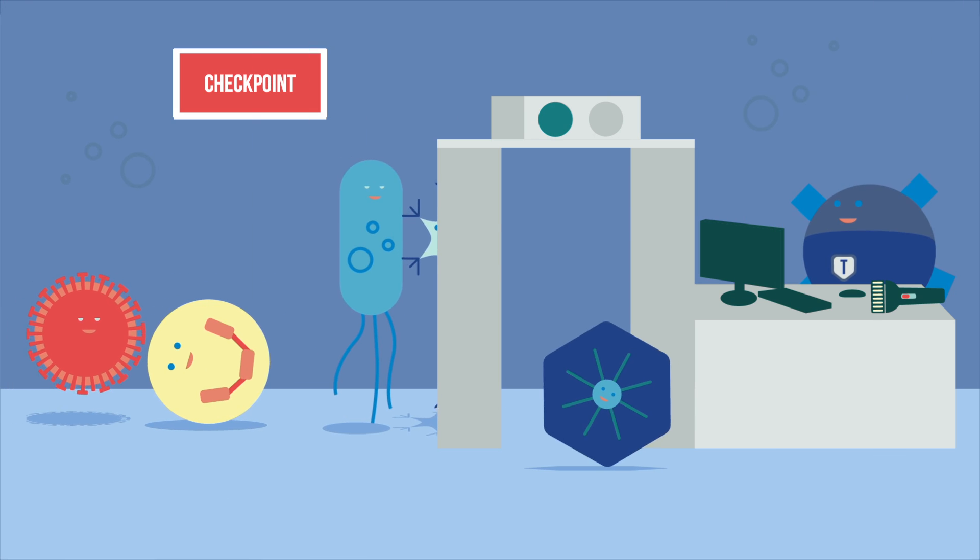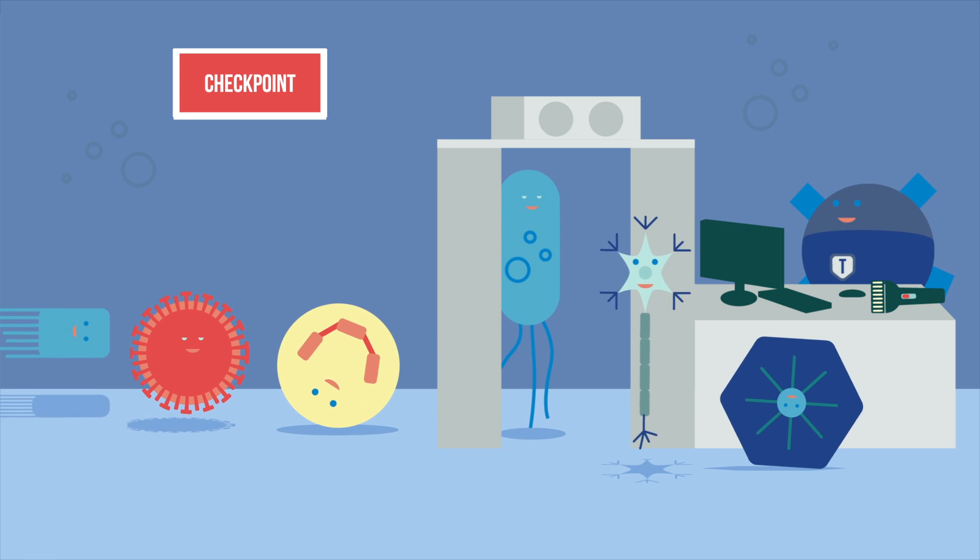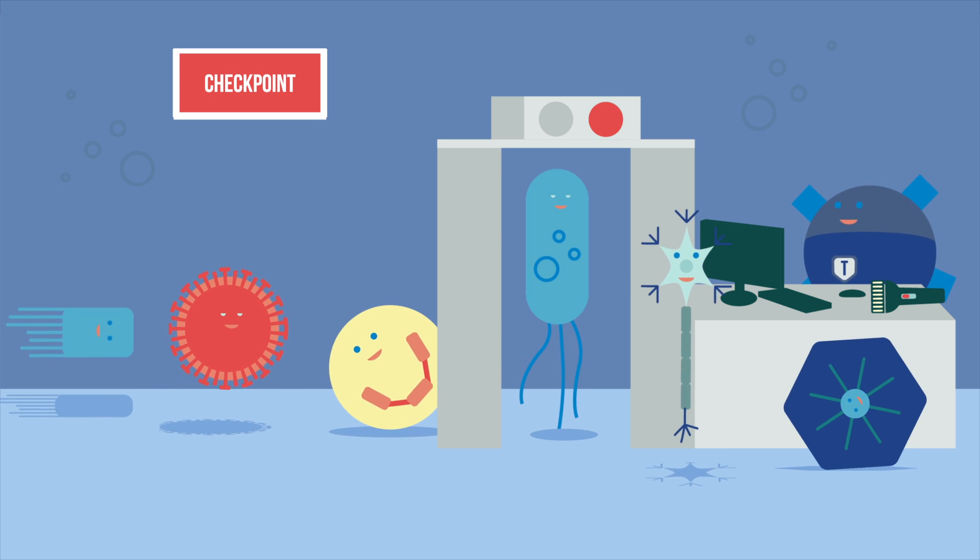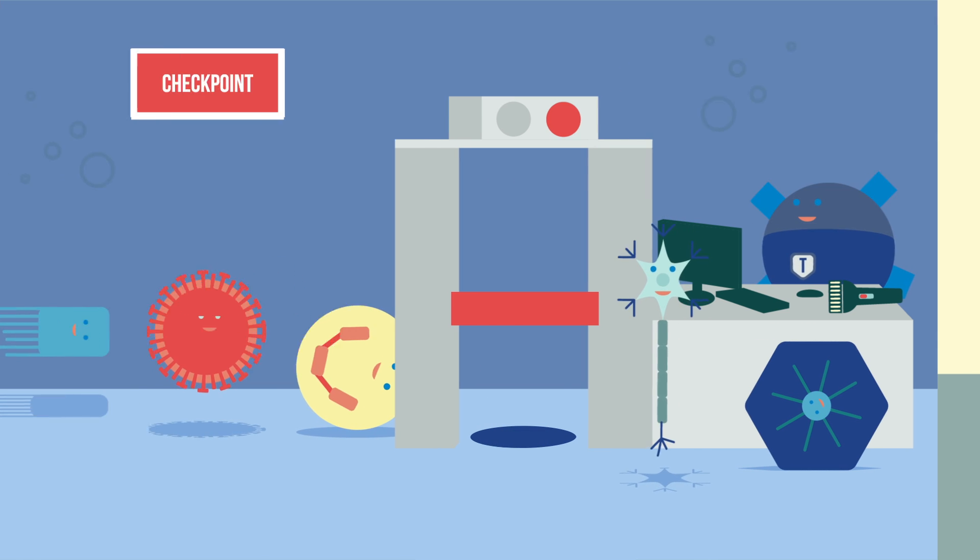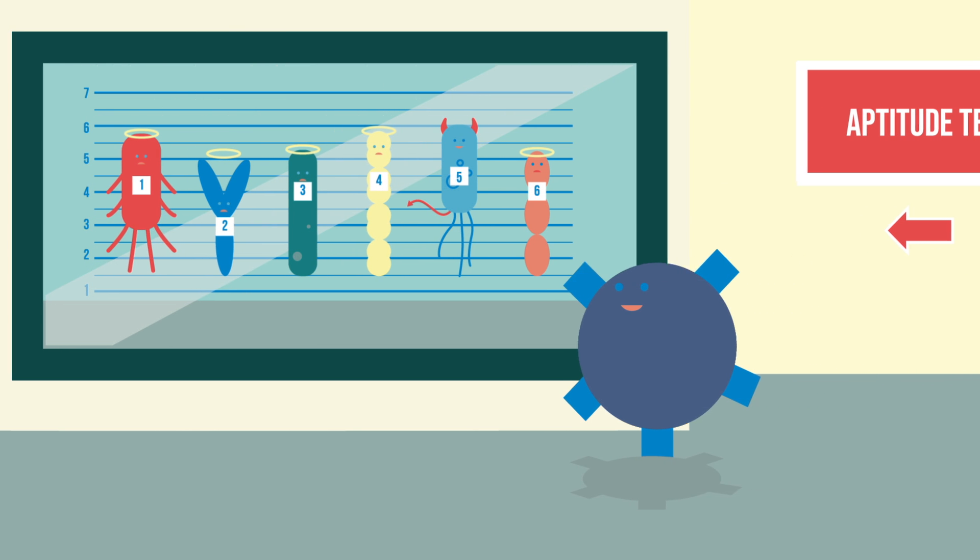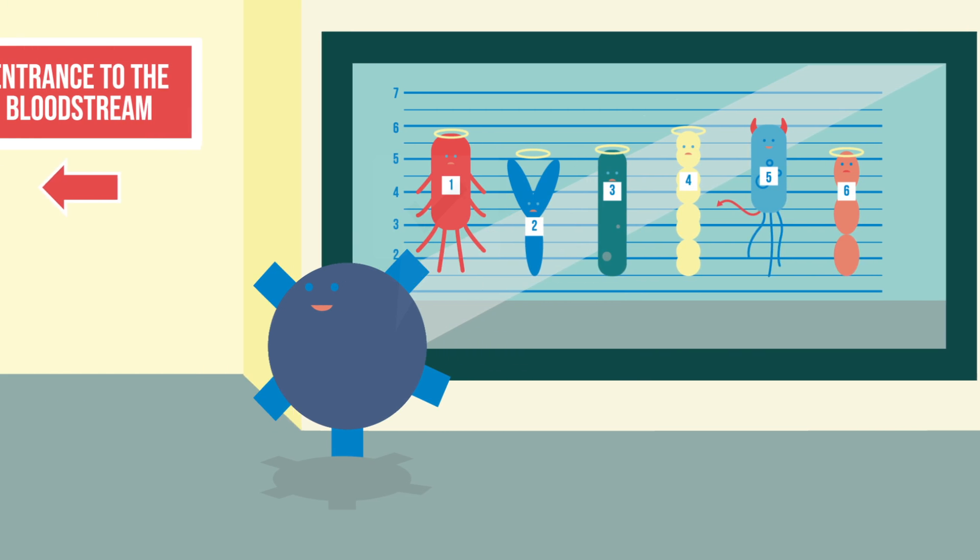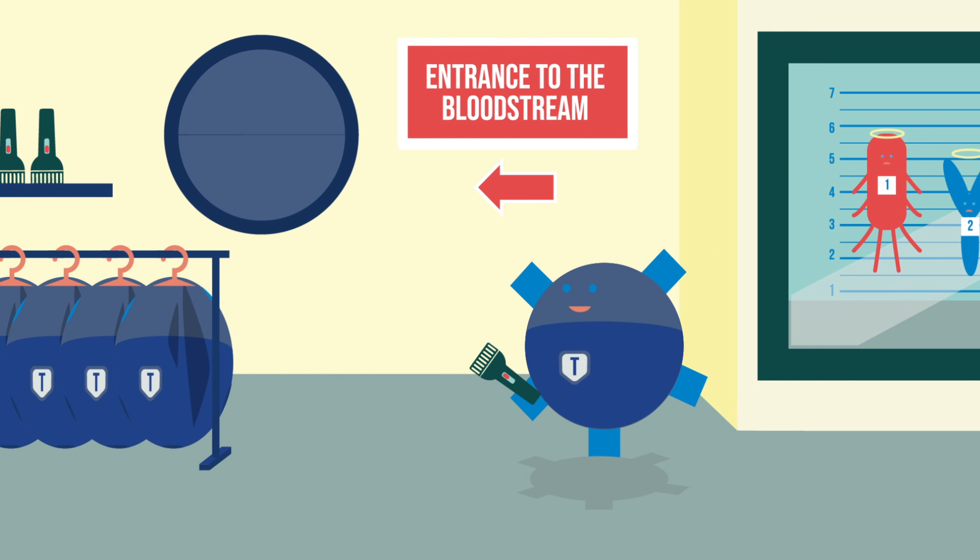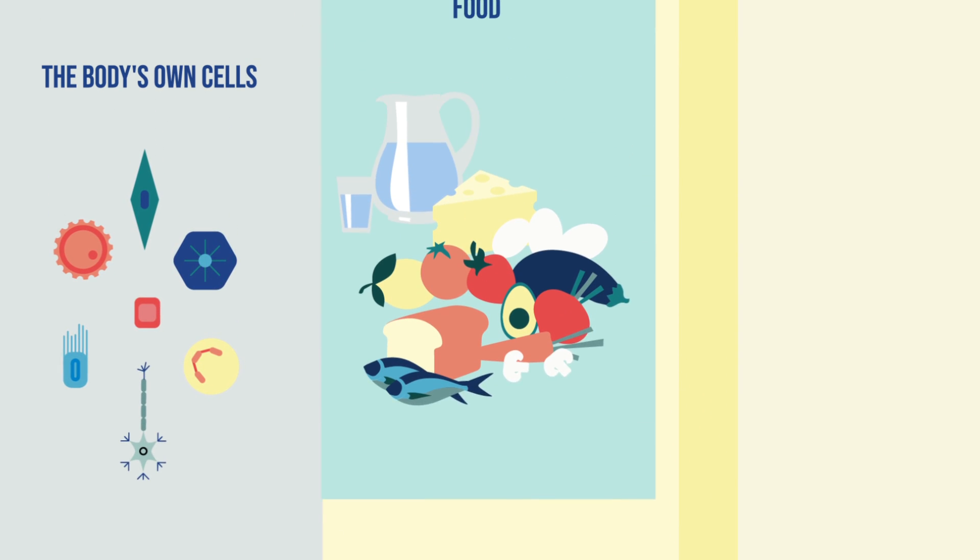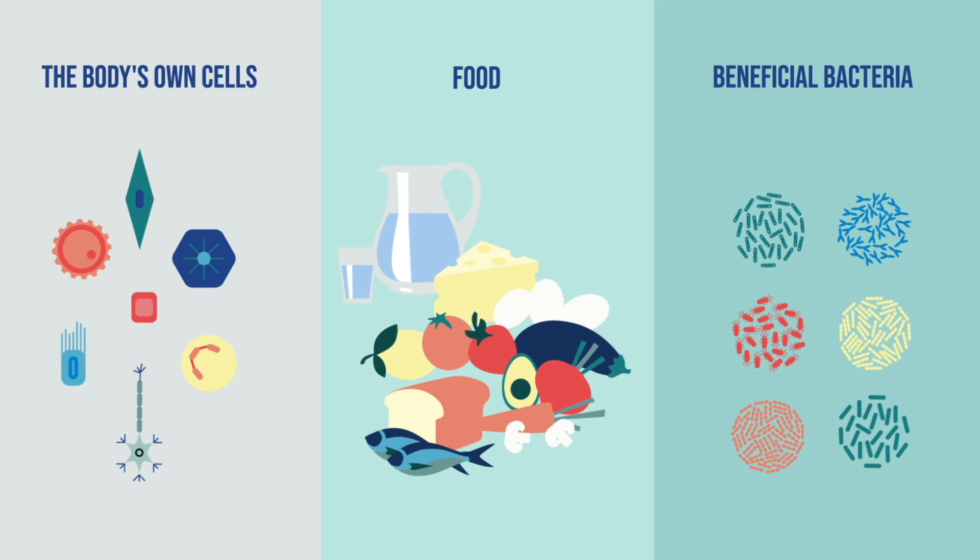The main function of the immune system is to differentiate between the body's own cells as well as dangerous and harmless foreign elements. A group of lymphocytes called T helper cells play a key role in recognizing dangerous intruders. These first go through an aptitude test in the thymus located in the chest. If the immune system is functioning correctly, only those can enter service that have proven they will not attack the body's own cells or such useful materials as food or the billions of good bacteria living inside our intestines.